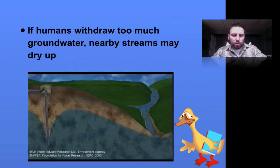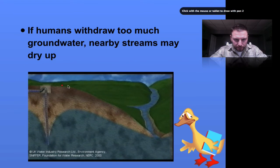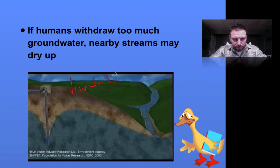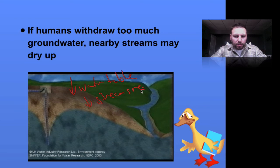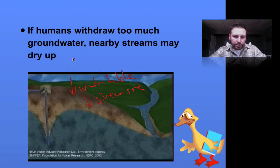That stream will dry up. As with causing discharge to decrease, we can also see during the summertime when that water table falls. If we decrease the water table, that'll decrease stream size because now there's less groundwater flow feeding the stream. We can see this in summertime or when we have increased rates of evaporation.